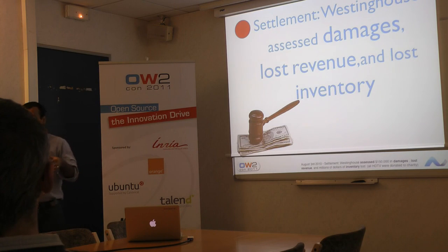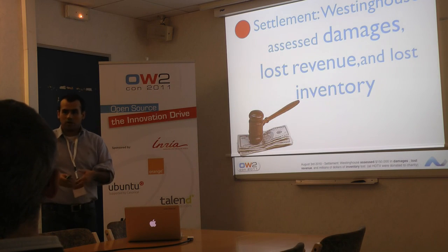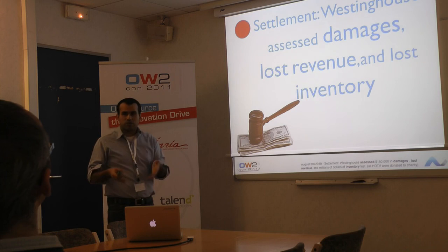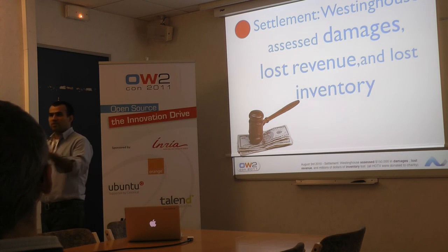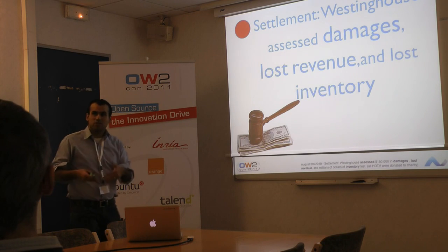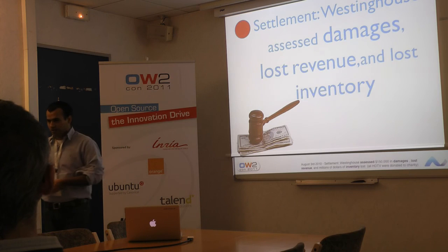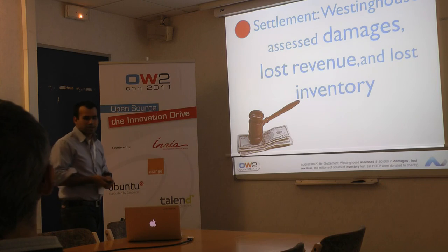But that was not the real loss. The real loss was the inventory — they had produced dozens of HD TVs and lost all the profit they could have made from those TVs. The court pronounced an injunction, forbidding Westinghouse to sell those TV sets. They were given to charity, and millions of dollars of materials were lost due to a small piece of software inside those HD TVs.